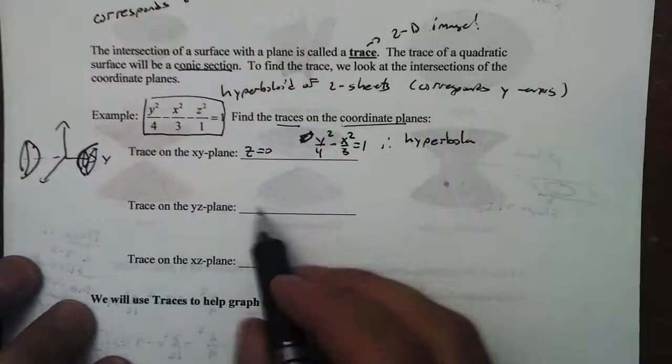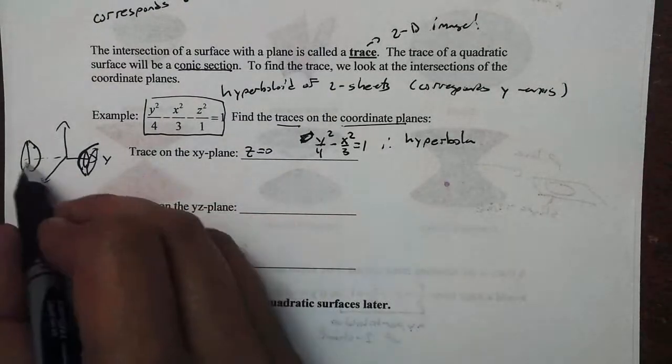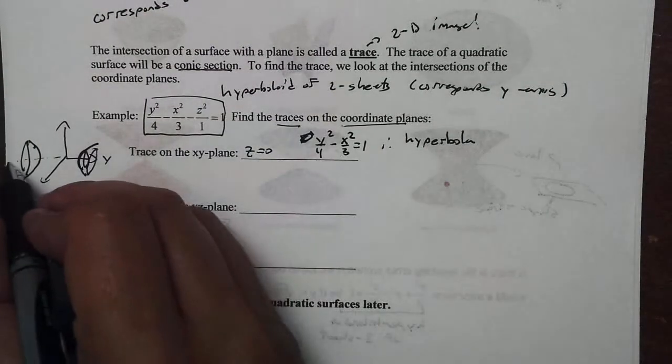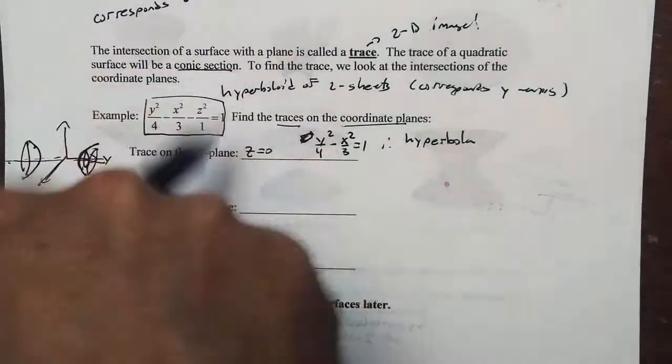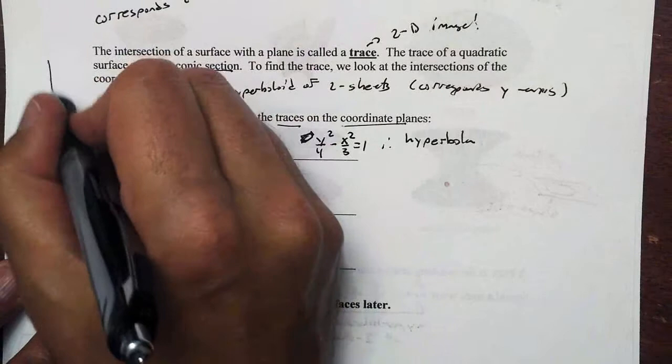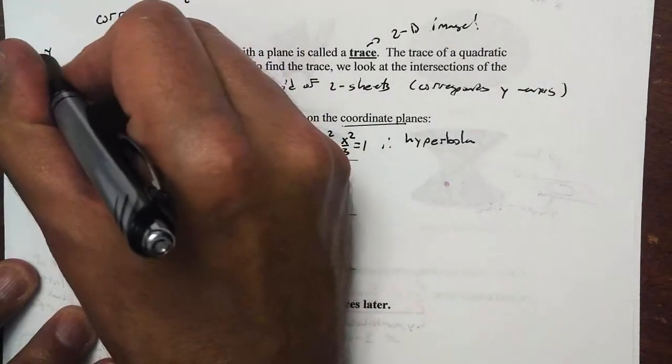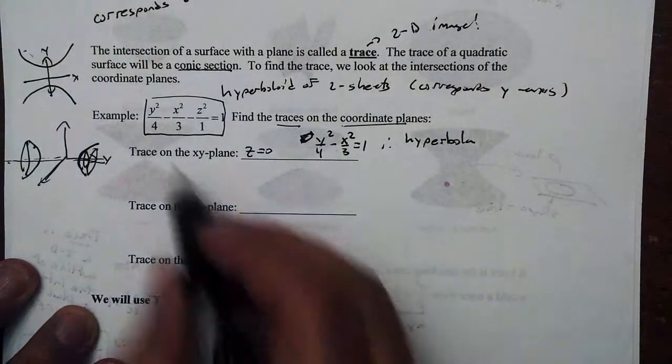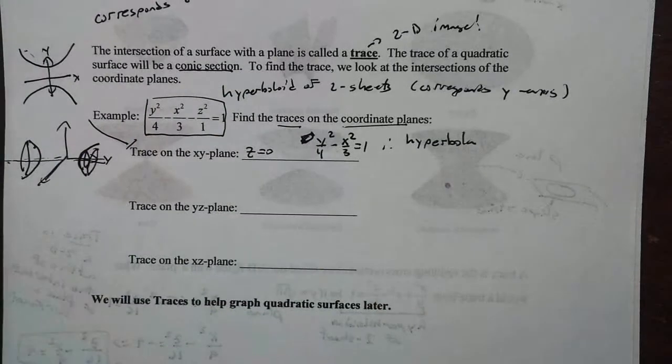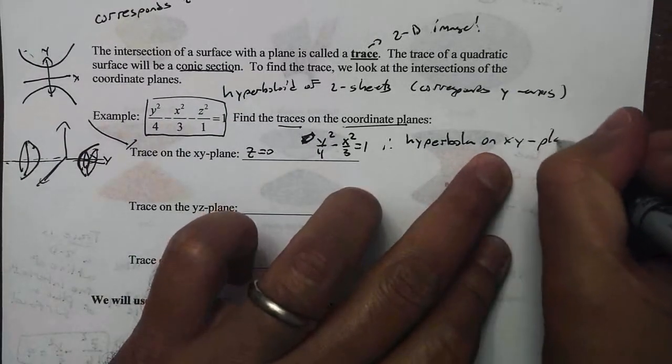So graphically, what it's saying is, if I let z be 0, that means on the xy plane right here, if I'm looking straight down on the xy plane, we would get this hyperbola right there. That would be that trace right there. It's a hyperbola on the xy plane.